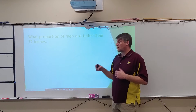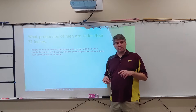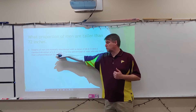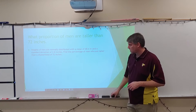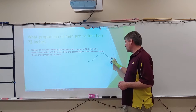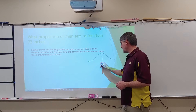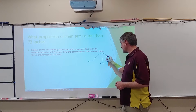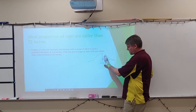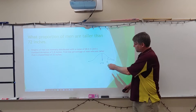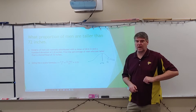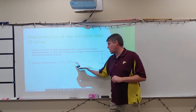What proportion of men are taller than 72 inches? Heights of men are normally distributed with a mean of 68.6 inches and a standard deviation of 2.8 inches. Find the percentage of men taller than a shower head of 72 inches. I'll sketch my normal curve, put in my mean of 68.6, and mark 72. I'm looking at the area to the right, which means finding the area to the left and subtracting from 1. Converting to a z-score: 72 minus 68.6 over 2.8.